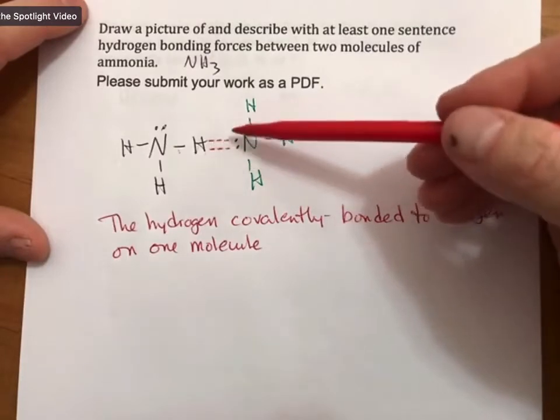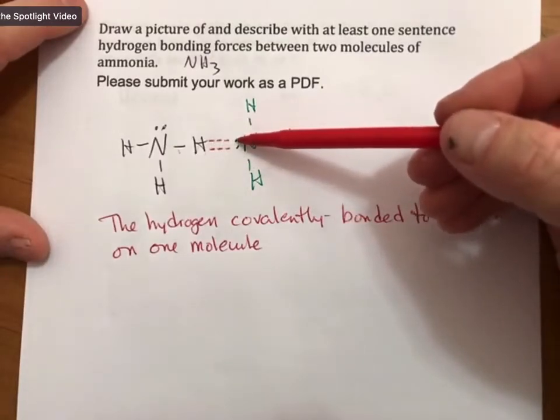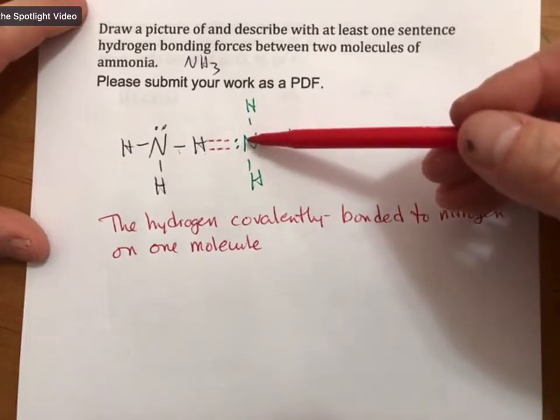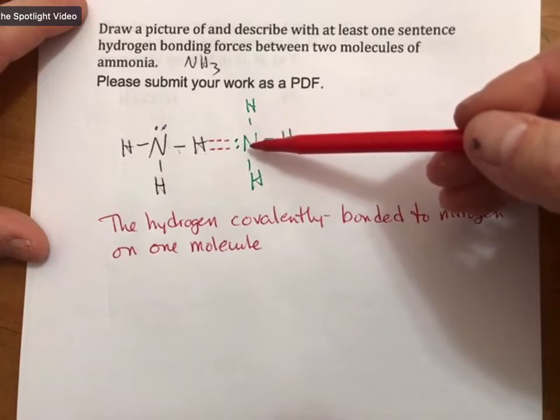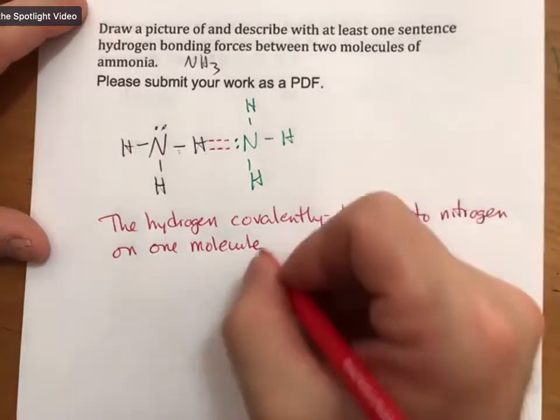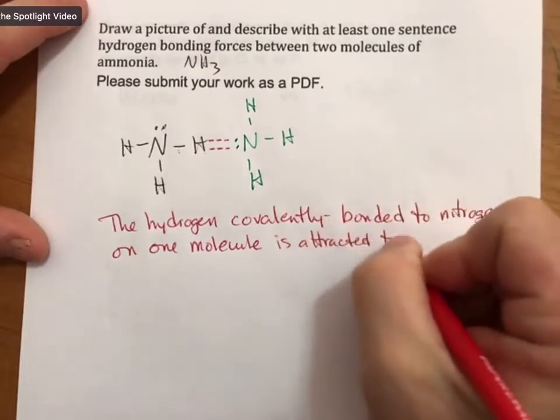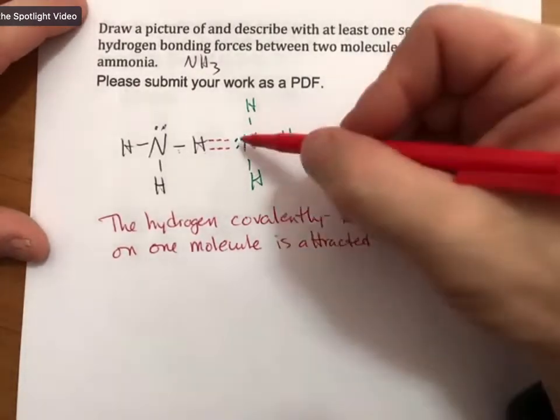So this red part is attracted to the lone pair of electrons on another molecule, or on nitrogen on another molecule. So it is attracted to the lone pair of electrons.